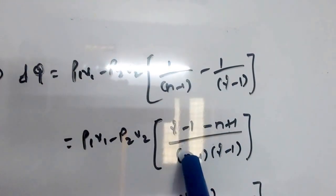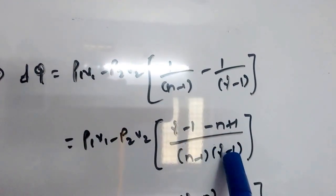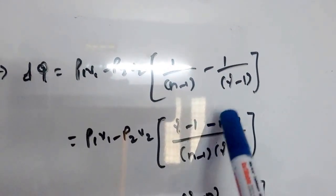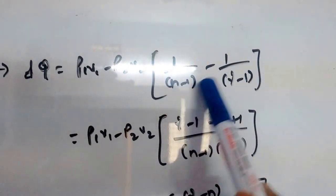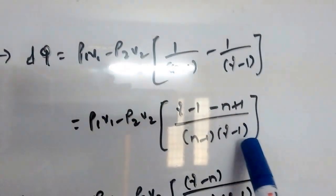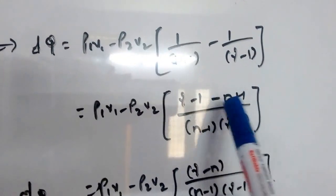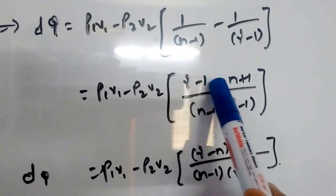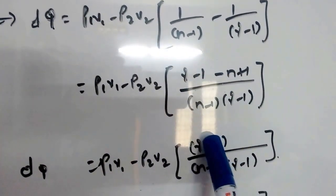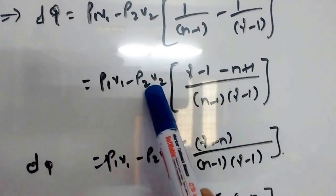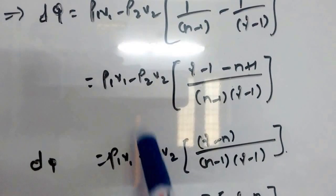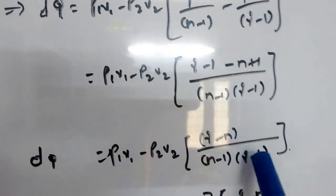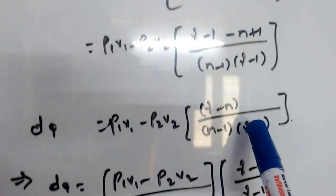Taking the LCM as (n minus 1)(gamma minus 1), the numerator becomes gamma minus 1 minus n plus 1. The minus 1 and plus 1 cancel, leaving gamma minus n. Therefore the expression becomes P1V1 minus P2V2 divided by (n minus 1), multiplied by (gamma minus n) divided by (gamma minus 1).